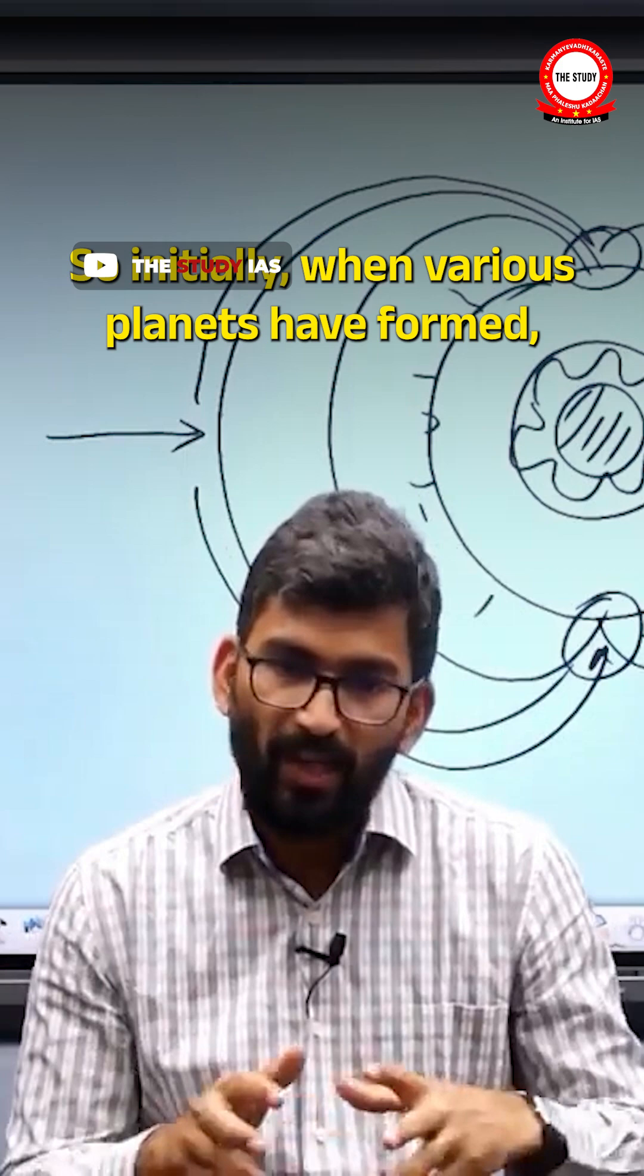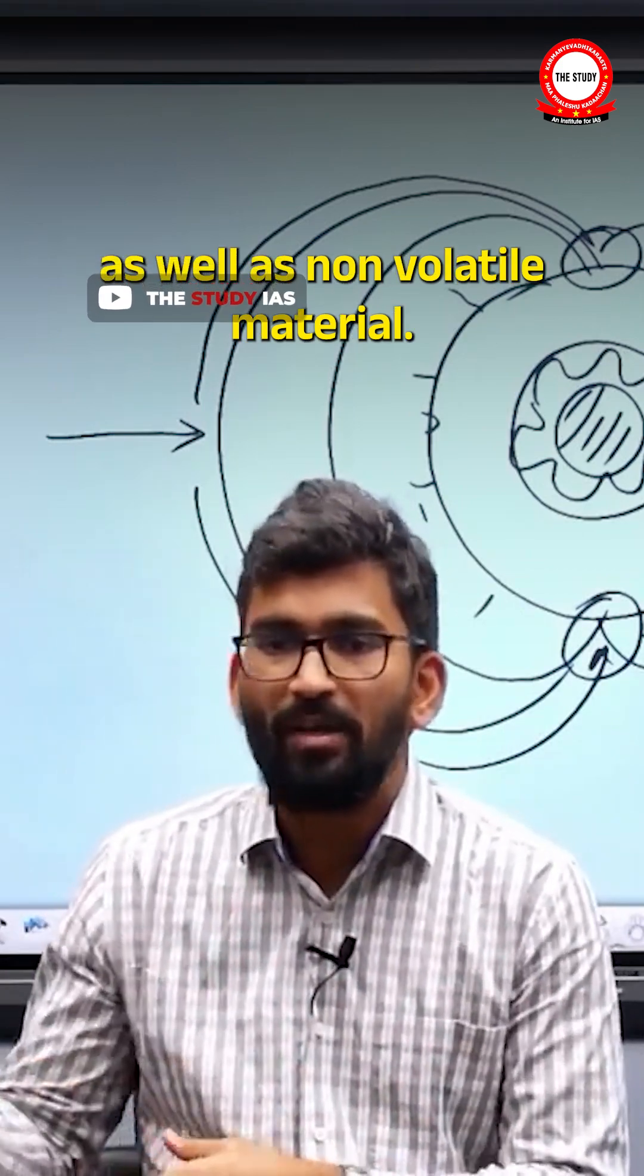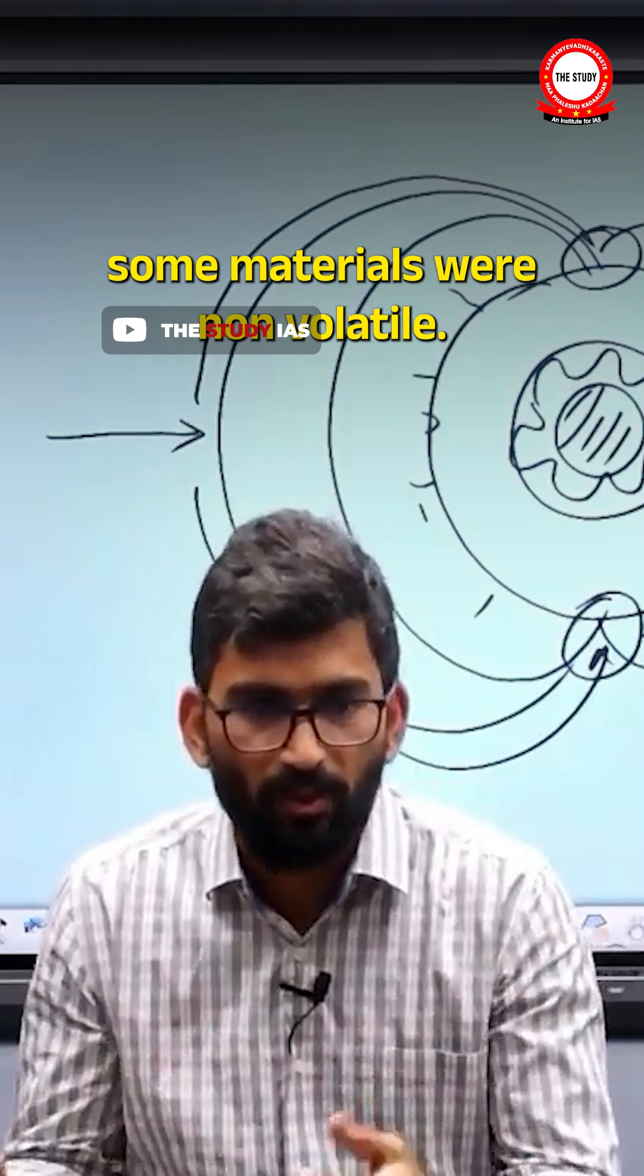So initially when various planets have formed, they were made up of volatile as well as non-volatile materials. Some materials were volatile, some materials were non-volatile.